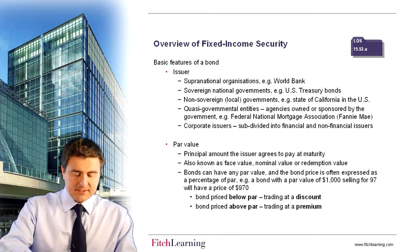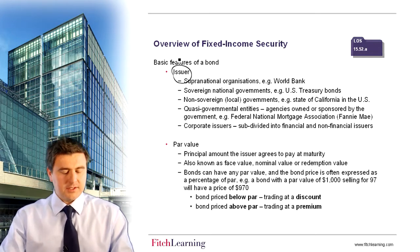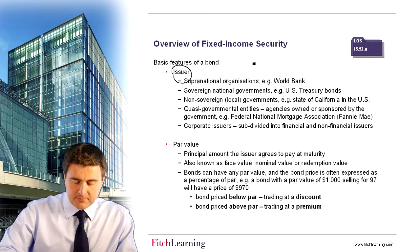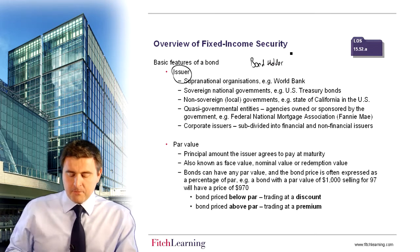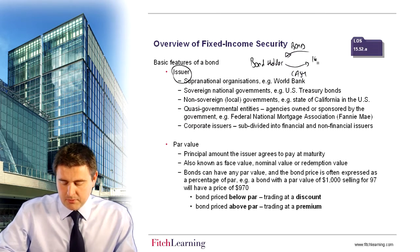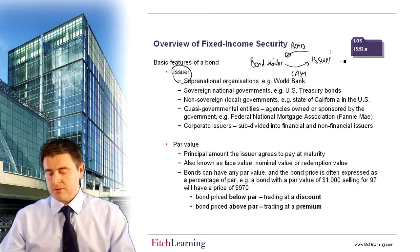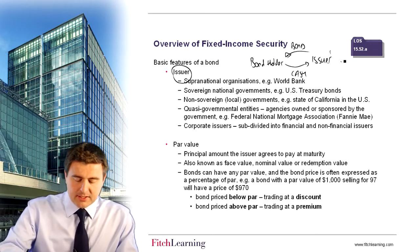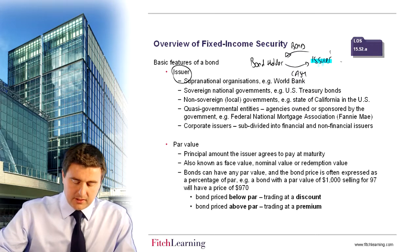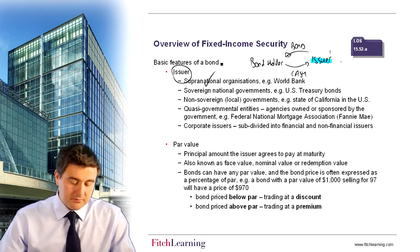The first concept we've got is the basic features of a bond. The first part is with regard to the issuer. You've got to remember that there would be a bondholder — that's the person that decides to buy this financial instrument known as a bond. In return, they will be giving cash to what we call the issuer. That's the entity that's issuing the bond in order to raise capital for many different purposes. The types of issuer might be a supranational organization, such as the World Bank, who need to raise finance.